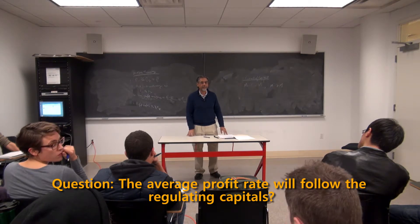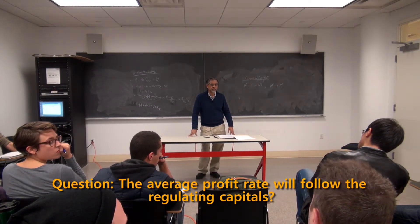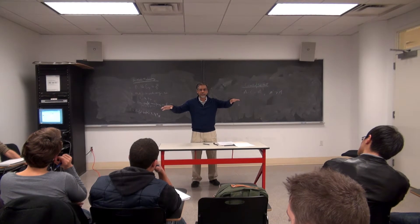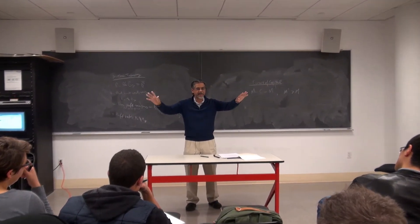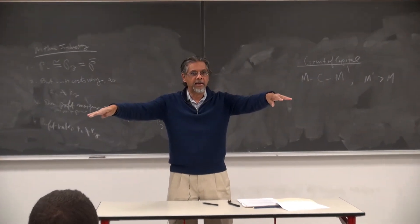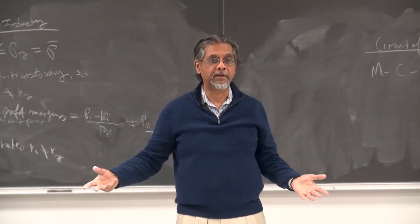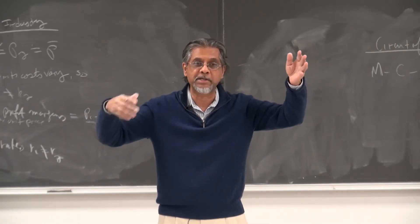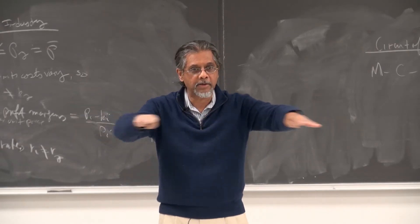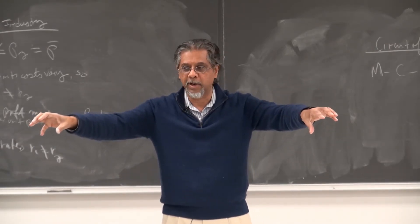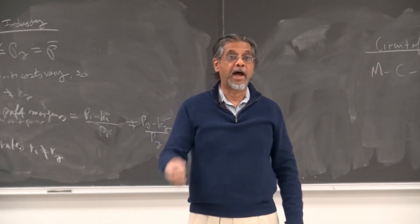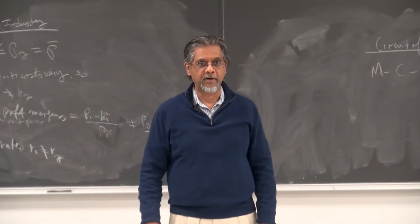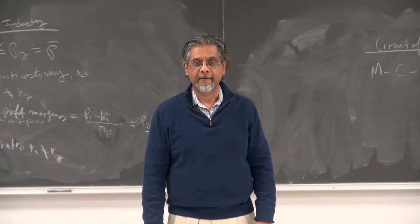Student question: Will average profit rates follow the regulating ones? Suppose there are only two regulating capitals, and competition makes their profit rates equal — that equal profit rate will be the general rate of profit. It doesn't mean it's constant over time; technical change can cause both to fall or rise, or wages may fall. But the hypothesis is that competition equalizes regulating rates of profit, not average rates.